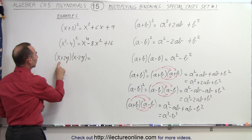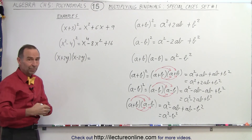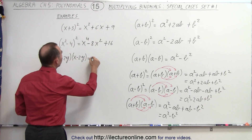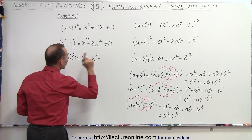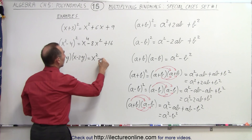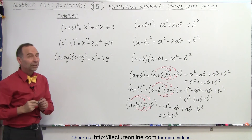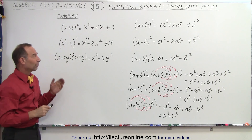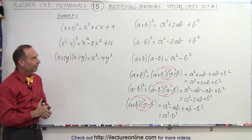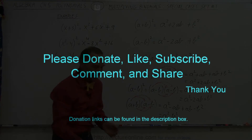And when you see something like x plus 2y times x minus 2y, you know the middle term simply drops out. It will be the first term squared minus — and that minus is important — the second term squared. So you can see it's a lot quicker if you remember how to do those three special cases. And that is how it's done. Thank you.